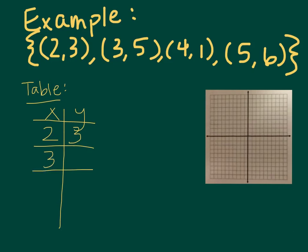Our next ordered pair, when x is 3, y is 5. Our next ordered pair, when x is 4, y is 1. And the last one, when x is 5, y is 6.